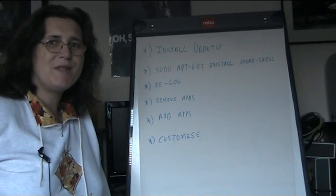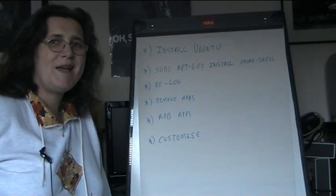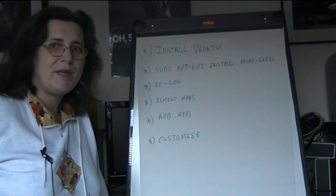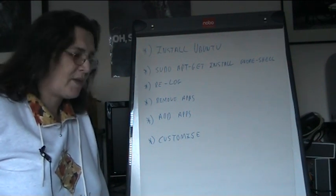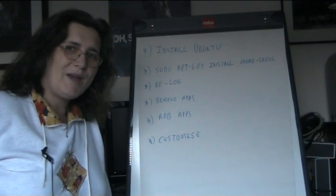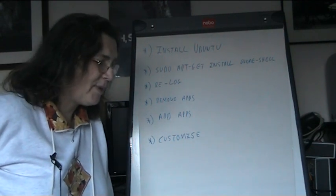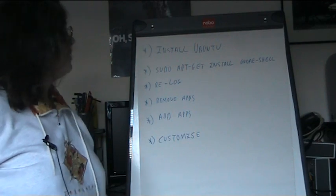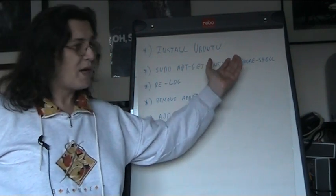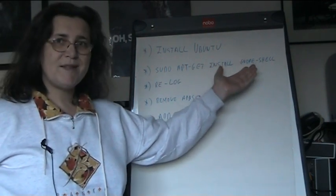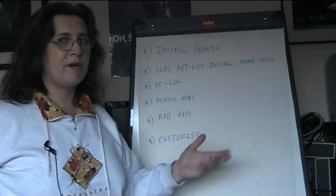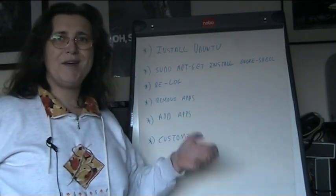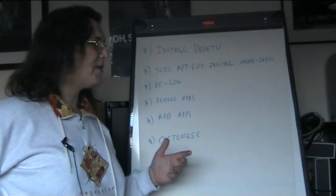Hello YouTube and welcome to Dumpster Linux part 10. In this part I'm going to show you the final installation routine. Previously we were installing Ubuntu which came with the Unity interface, and Unity is a very Marmot interface — if you like it, good; if you don't, we're going to need to replace it with something.